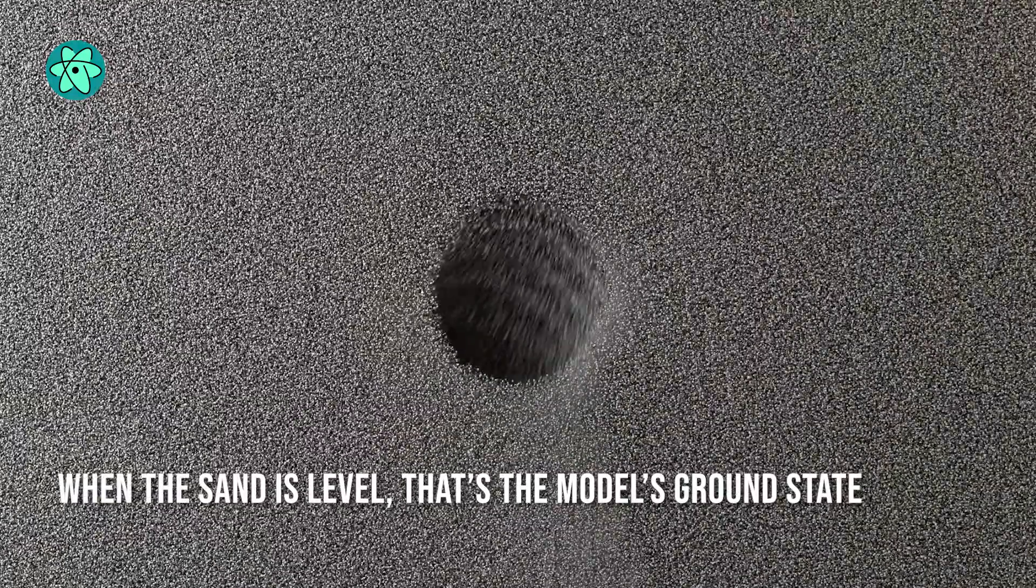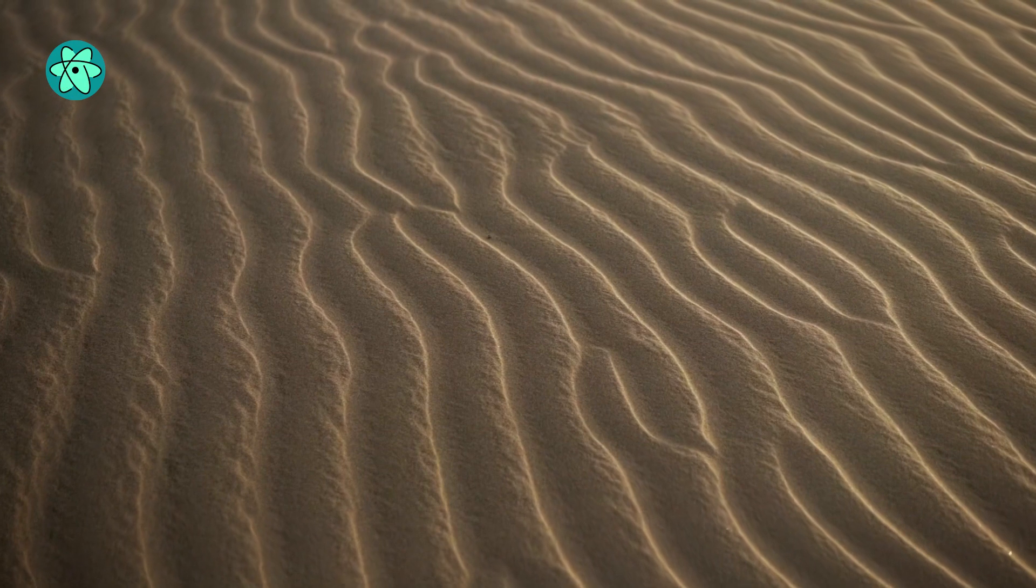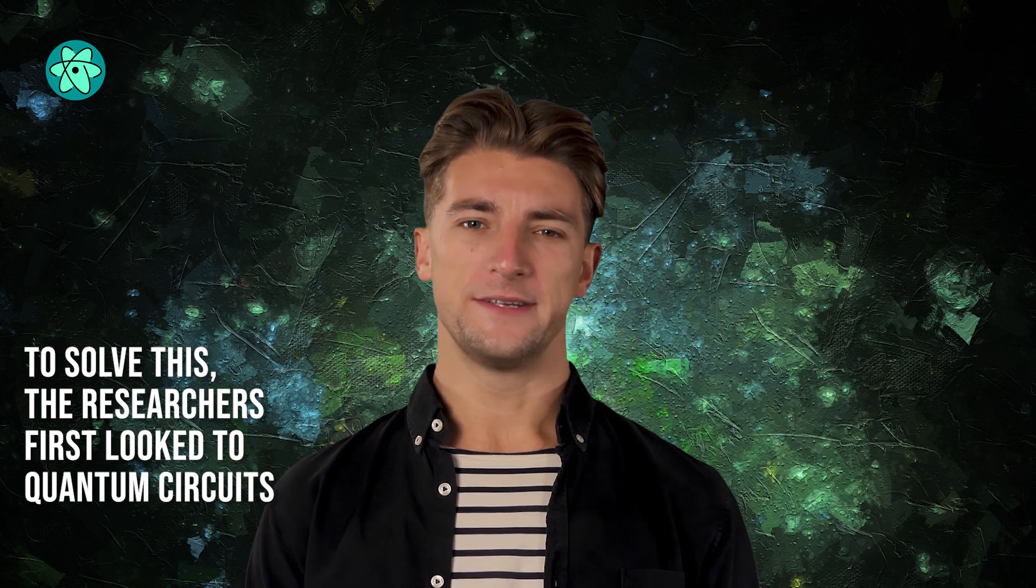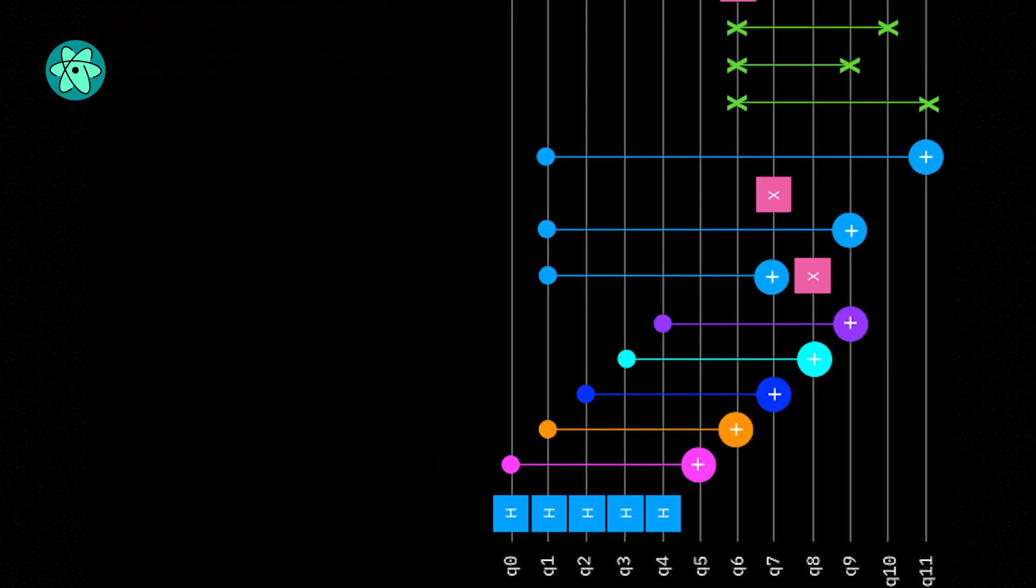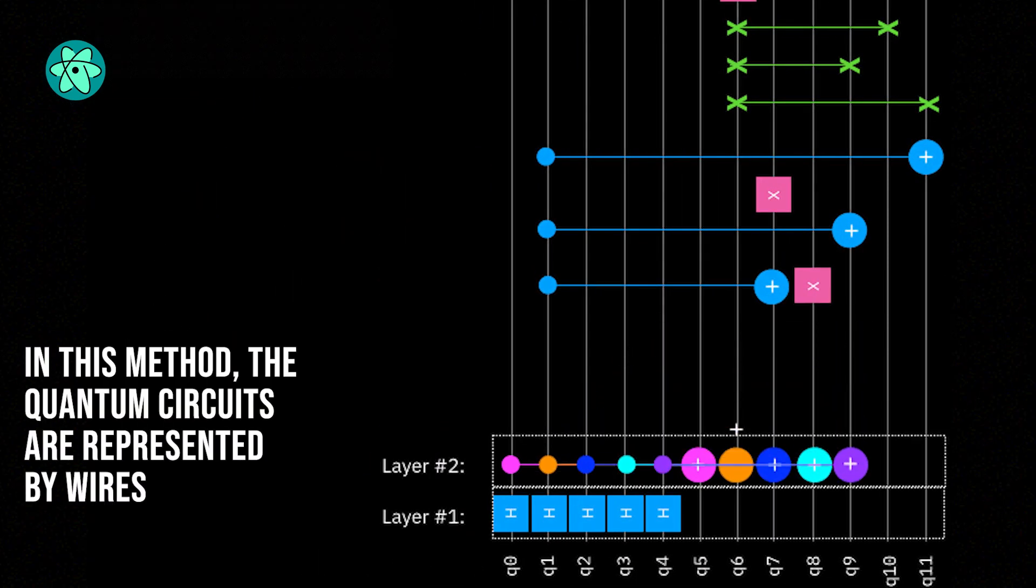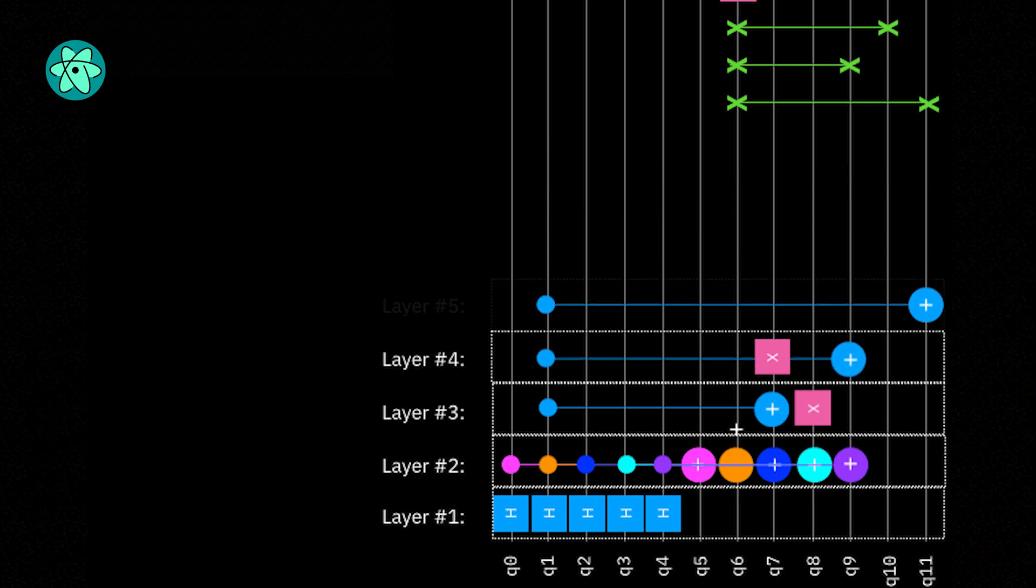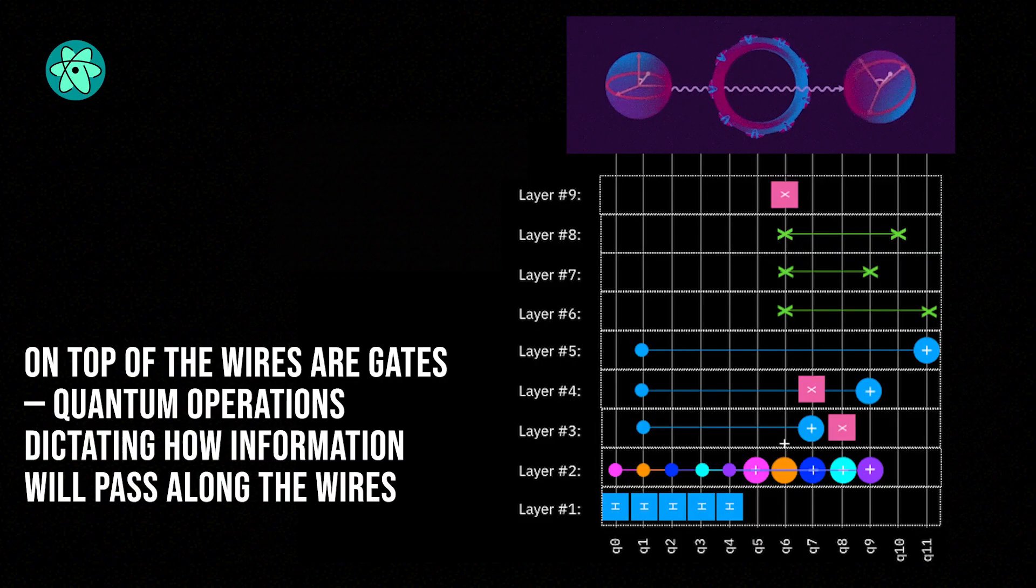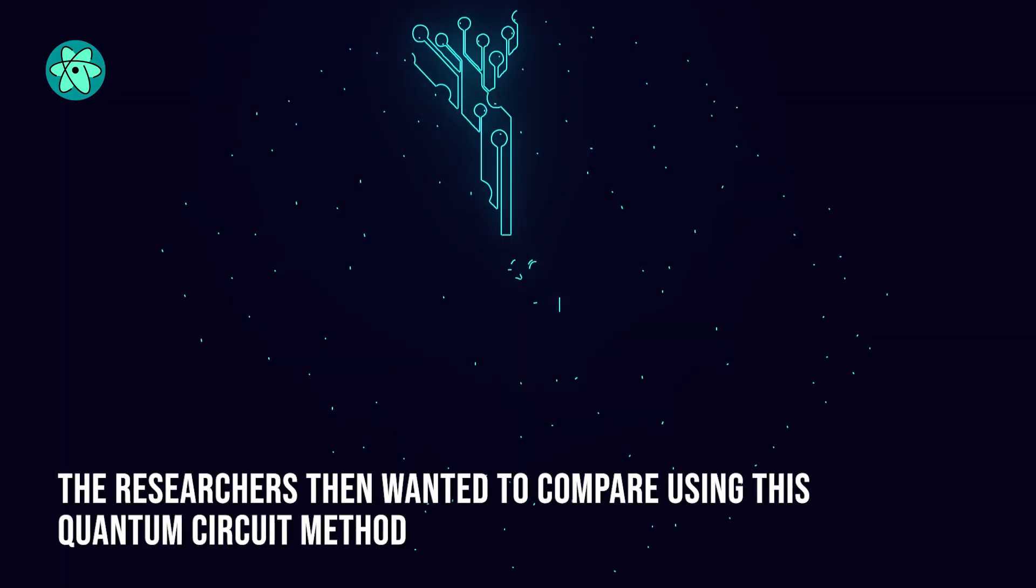When the sand is level, that's the model's ground state. But if there are ripples in the sand, you have to find a way to level them out. To solve this, the researchers first looked to quantum circuits. In this method, the quantum circuits are represented by wires, and each qubit, or bit of quantum information, is a wire.